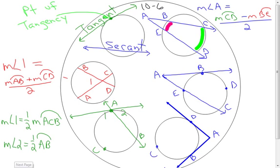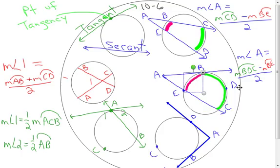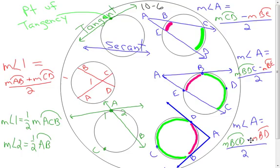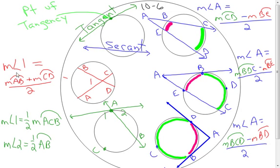It's not going to be any different for the next cases — again, big arc minus little arc divided by 2, and same thing for the last one. Keep in mind these formulas aren't just used to find the measures of angles. If I knew the measure of angle A and the measure of the big arc, I'd have one variable left and could solve for the little arc. Or if I knew the little arc and the angle, I could solve for the big arc. As long as you only have one variable in your equation, you should be able to solve it.